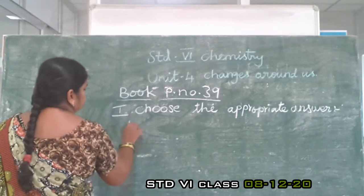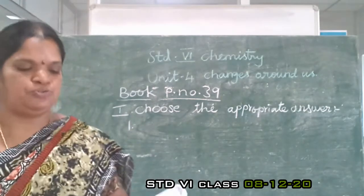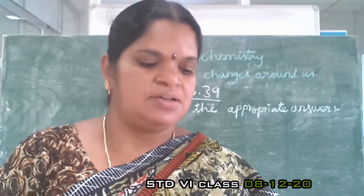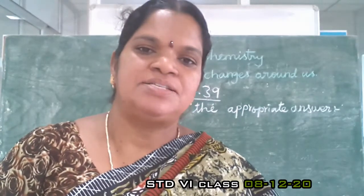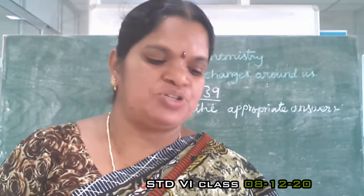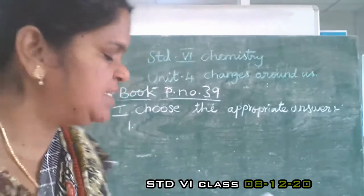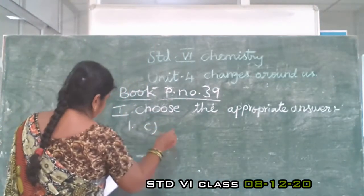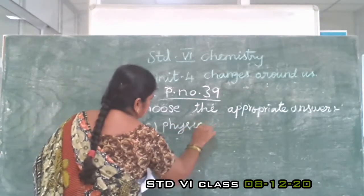First division, first question. When ice melts to form water, a change occurs in its — option A: position, option B: color, option C: physical state, option D: decomposition. Which one is correct? Physical state — option C. First one answer: option C, physical state.